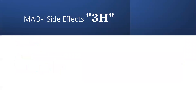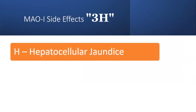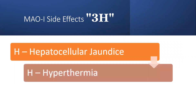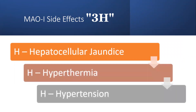MAO inhibitor side effects are remembered as 3H: H for hepatocellular jaundice, H for hyperthermia, and H for hypertension.